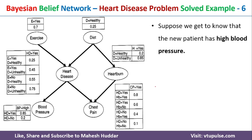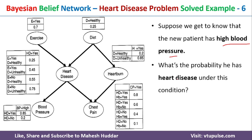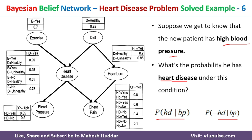Given this, if we know that a particular person is having high blood pressure, we want to know whether that person is having heart disease or not. To determine this, we need to solve two things: the probability of heart disease given blood pressure, and the probability of not having heart disease given blood pressure.